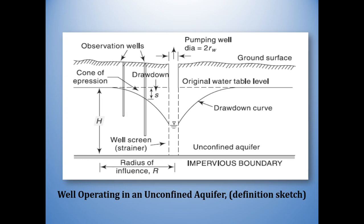This is a definition sketch representing a well operating in an unconfined aquifer. As you can see, the well is shown by this particular dotted line. This is the impervious boundary, this is the original water surface, and this is the ground surface. Here you can see different terminologies like cone of depression, observation wells, drawdown, and drawdown curve. We will see these terms to understand and then proceed with the well hydraulics.